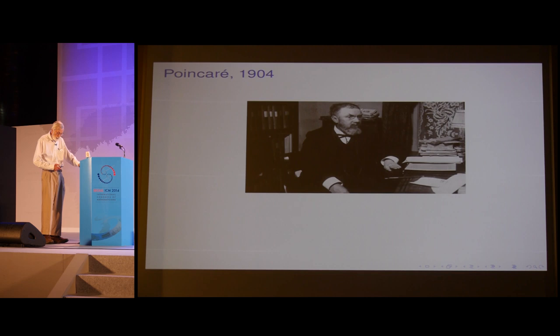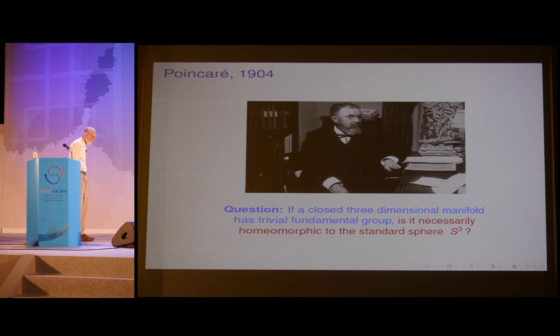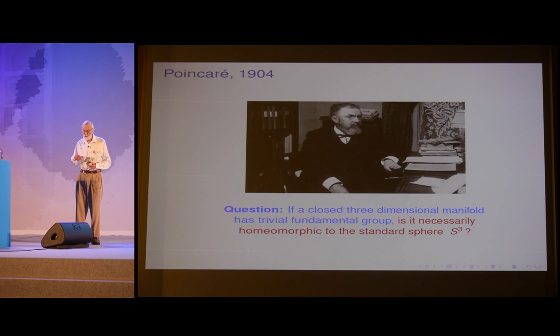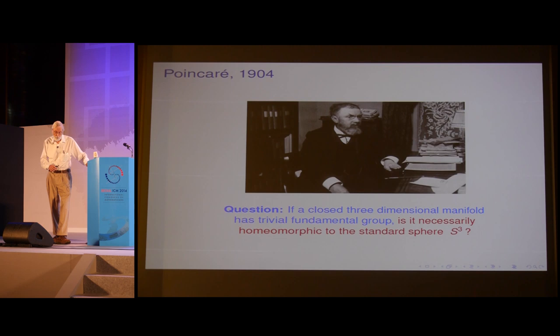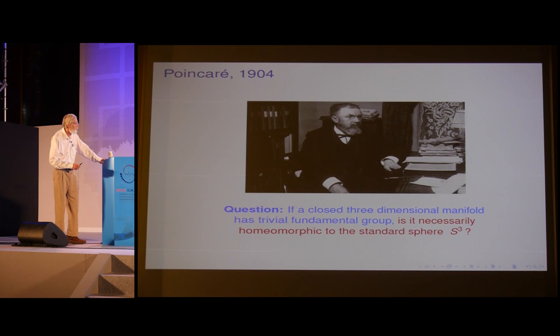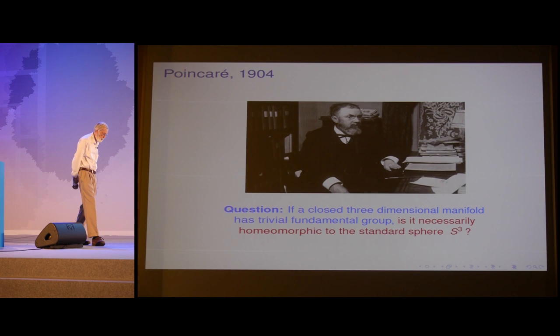It's impossible to talk about three-manifolds without mentioning Poincaré's fundamental question. He first conjectured that a closed three-manifold with the homology of a sphere must be the standard sphere, but then found a counterexample—something with the homology of a sphere but a non-trivial fundamental group. He then asked whether trivial fundamental group implies homeomorphism to the standard sphere. This question drove topologists crazy for a hundred years, with many attempted proofs that all seemed to break down.